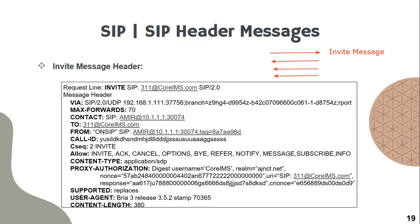As we said, the invite message is divided into two things: the SIP header, which is the information of the SIP signaling, and the SDP body, which is the information that describes the traffic or speech traffic and how it looks like.